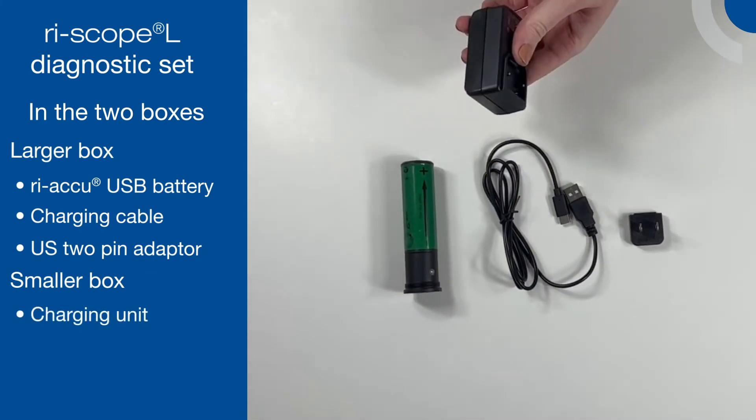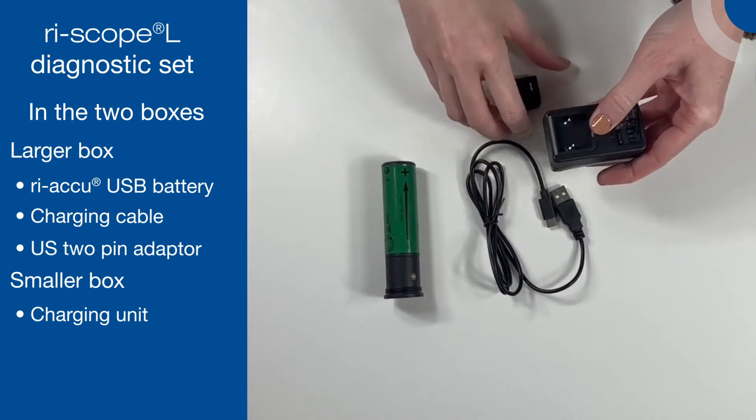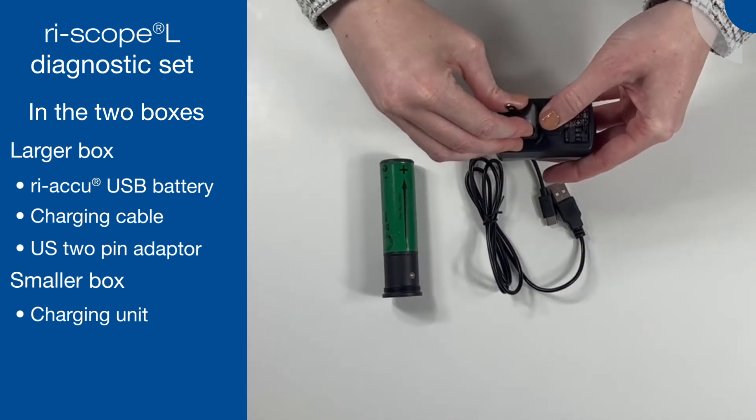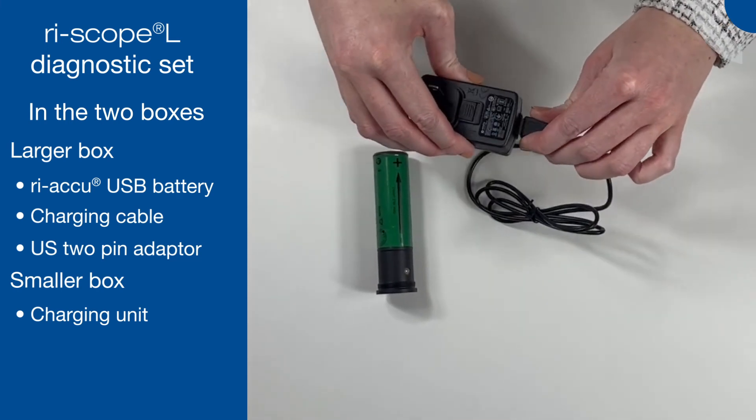Attach the US 2-pin adapter to the charging unit by pushing the button down on this unit and sliding the pin adapter into place. Release this button once it is in place to secure the attachment.